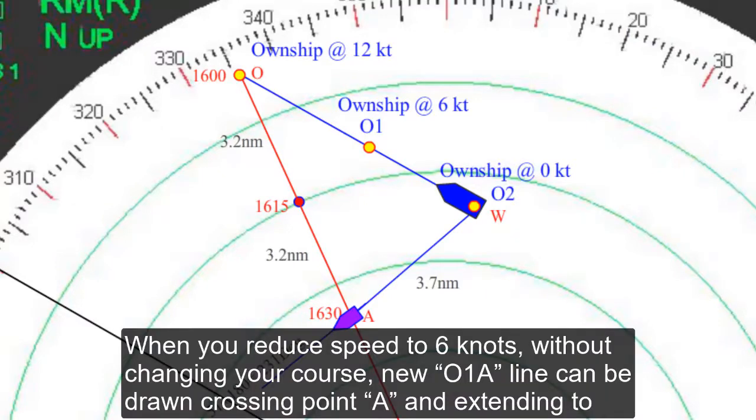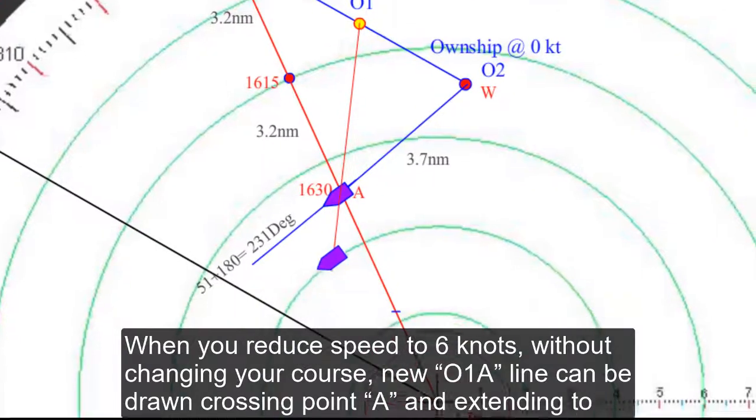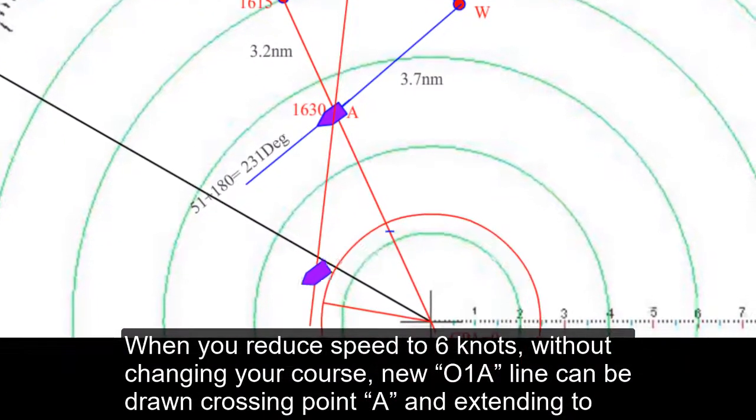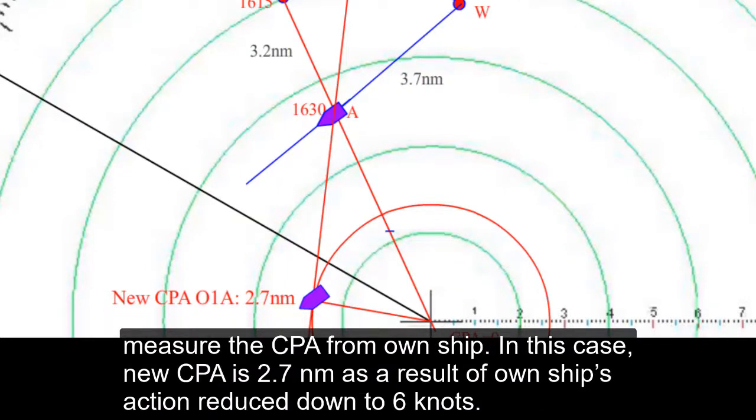When you reduce speed to 6 knots without changing your course, new O1-A line can be drawn crossing point A and extending to measure the CPA from the own ship. In this case, new CPA is 2.7 nautical miles as a result of own ship action reduced down to 6 knots.